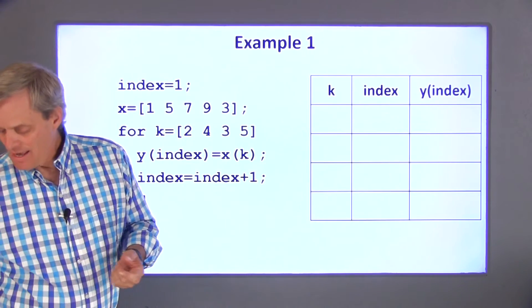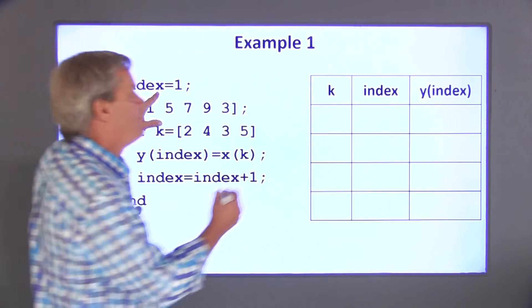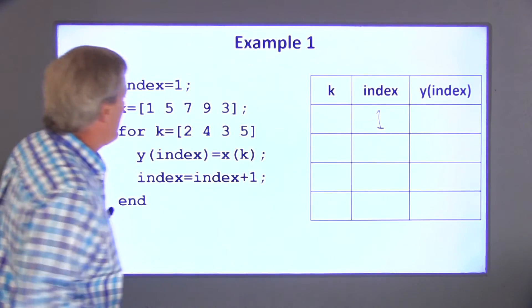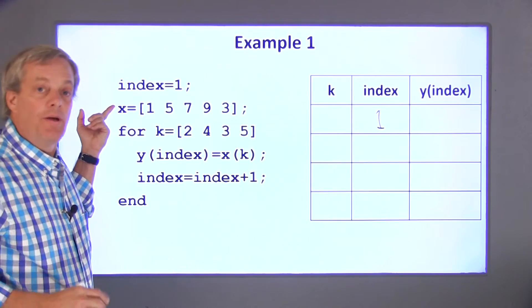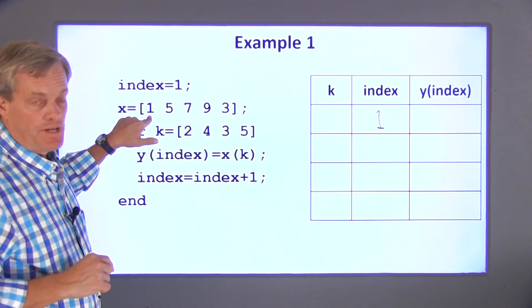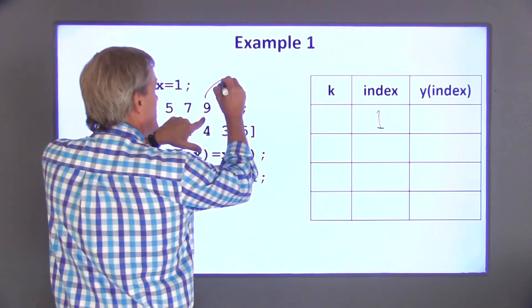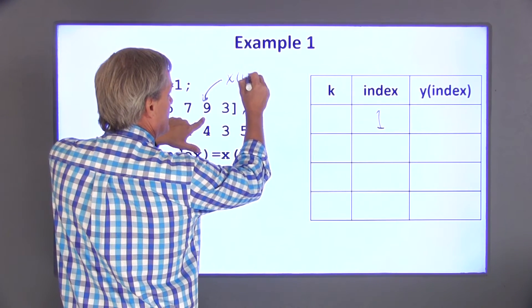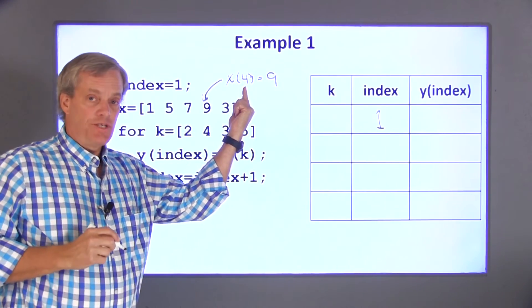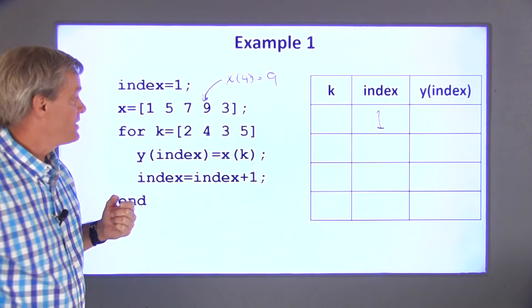The variables index and x are initialized before the loop starts. So before the loop starts, index is equal to 1. x is initialized as an array. Make sure you've got your array notation straight here. This is the first element in x, this is the second, this is the third, and this is the fourth. So x of 4 is equal to 9. We have to keep track of both the location in the array and the actual value itself. Don't get those mixed up.